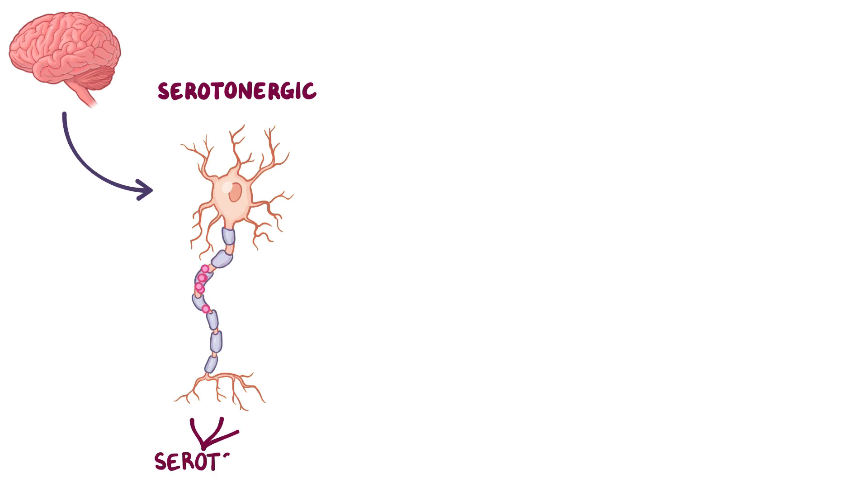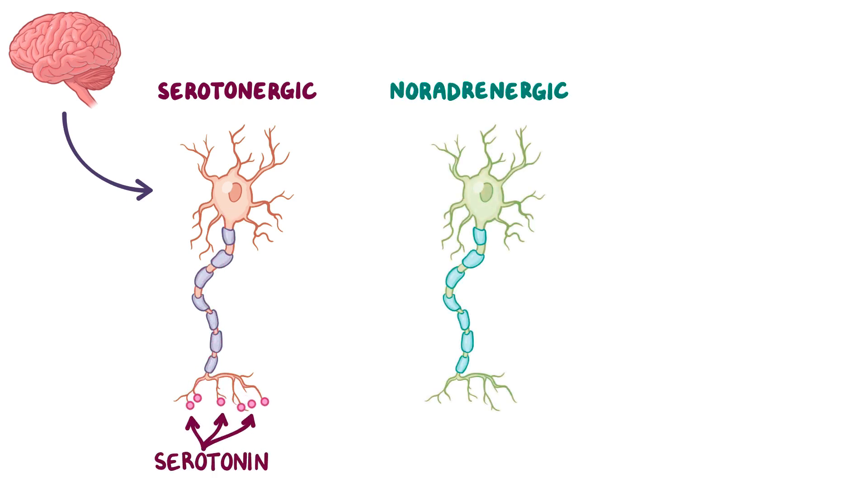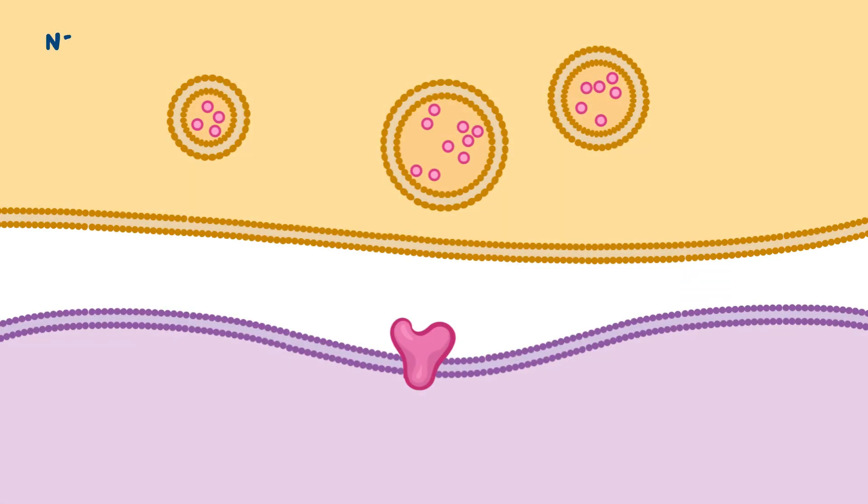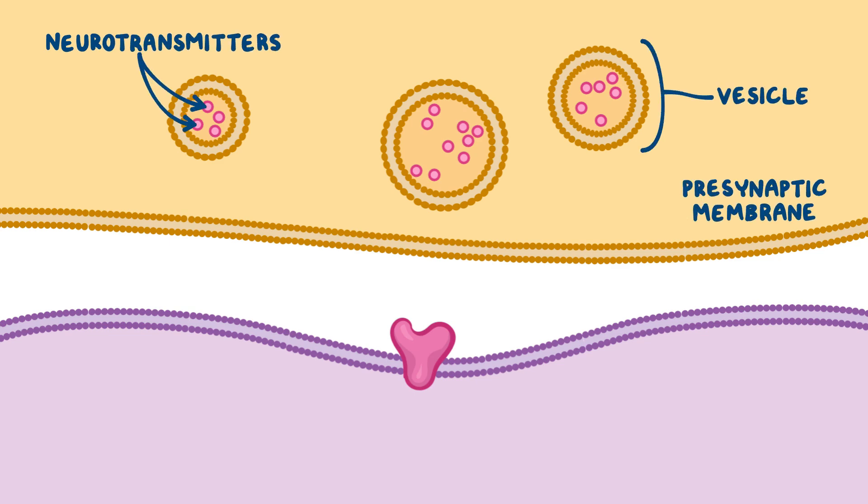Serotonergic neurons that release serotonin, noradrenergic neurons that release norepinephrine, and dopaminergic neurons that release dopamine. Each of these neurons synthesizes and stores neurotransmitters in small vesicles, so when an action potential reaches the presynaptic membrane, these vesicles fuse with the membrane, releasing neurotransmitters into the synaptic cleft.